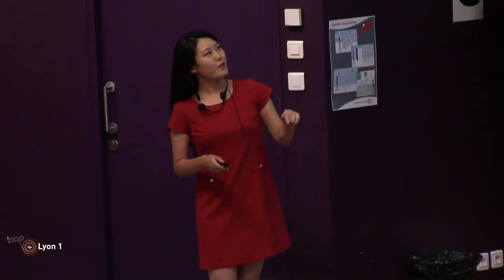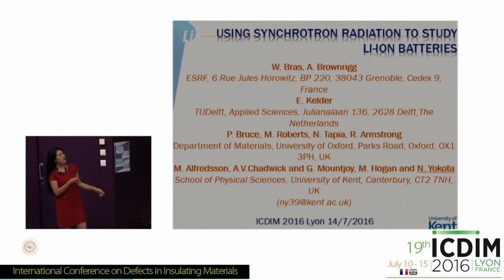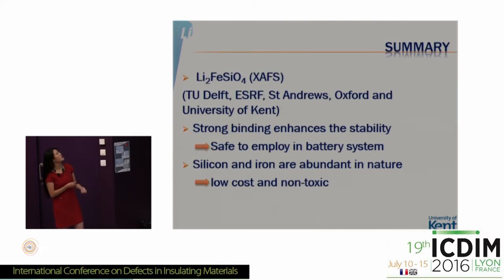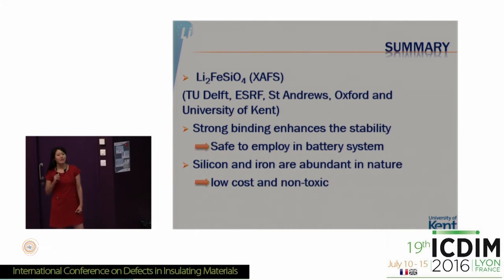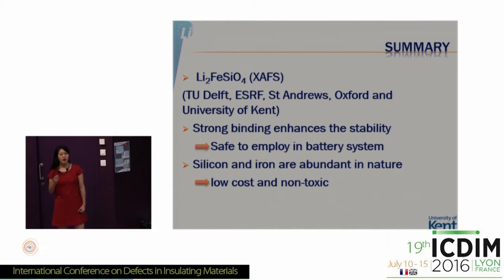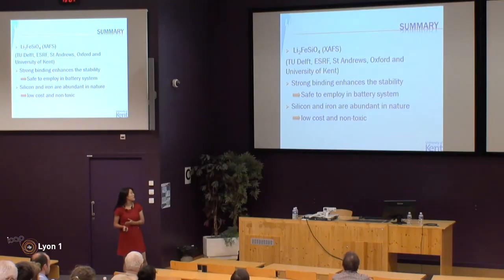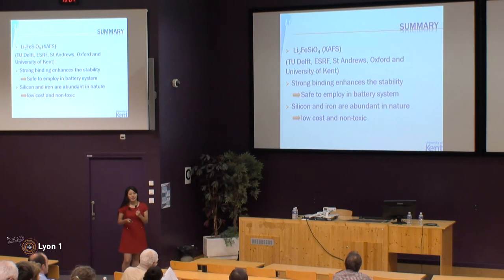I am working on lithium-ion batteries and I am going to talk about lithium iron silicate, which is a cathode material in lithium-ion batteries. It has been a really interesting topic for the past 10 years because lithium iron silicate is made of iron and silicon — both abundant in nature, and therefore low toxicity, low cost, and considered to be a very safe battery material.